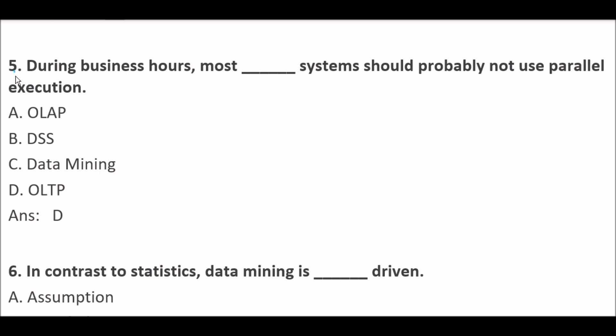Next question. During business hours, most blank space systems should probably not use parallel execution. Option A: OLAP. Option B: DSS. Option C: Data Mining. Option D: OLTP. Right answer is Option D — OLTP. During business hours, most OLTP systems should probably not use parallel execution.